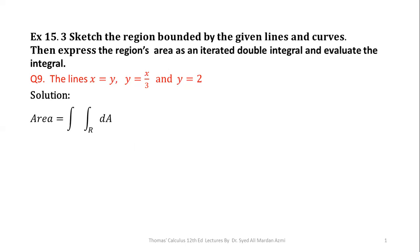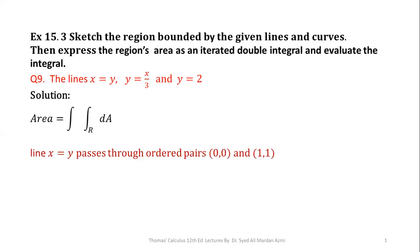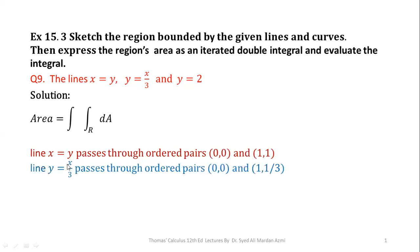Now we will learn about these lines. The line x = y passes through ordered pairs where the values of x and y are the same, like (0,0), (1,1), (2,2), and (3,3). You can calculate these ordered pairs by substituting different values of x into the equation. Similarly, for the next line y = x/3, we can calculate different ordered pairs like (0,0) and (1, 1/3).